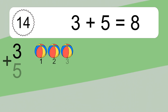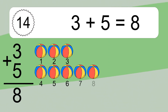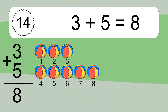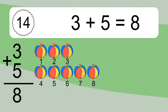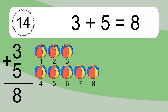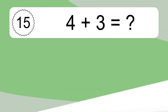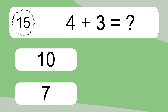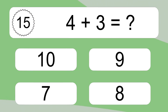3 plus 5 equals what? 3 plus 5 equals 8. Let's count it: 1, 2, 3, 4, 5, 6, 7, 8.